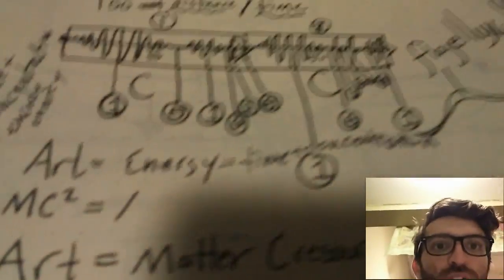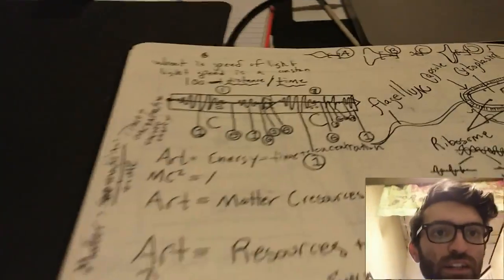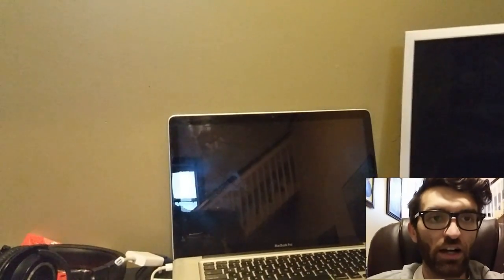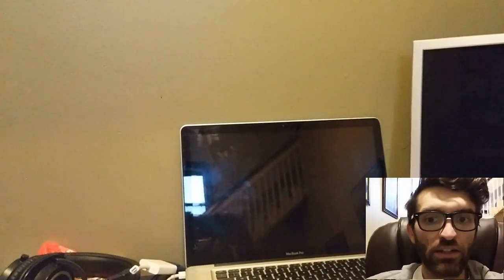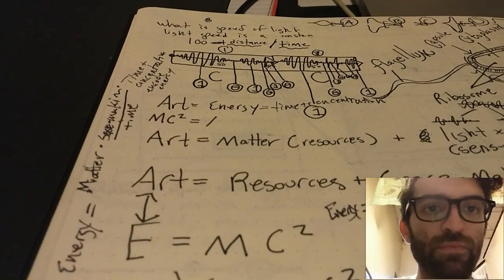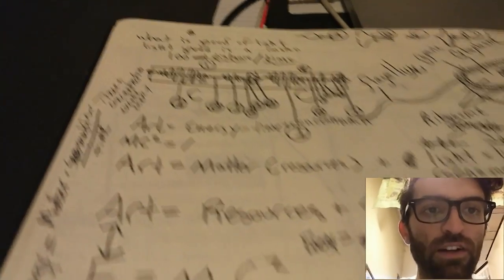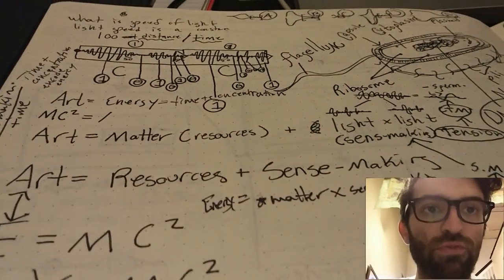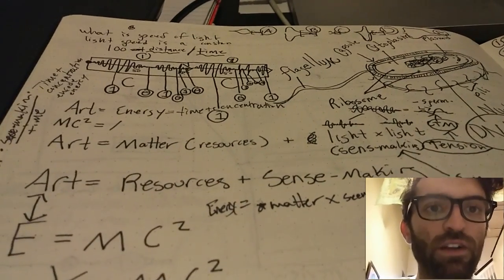We've defined art as energy — encoding energy into the environment in some way. So E=mc². Energy meaning it's art. Matter is resources, both physical and conceptual. And C squared — that's strange. What does it mean to square C?